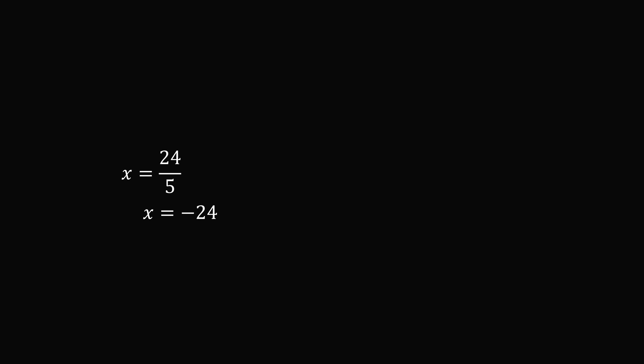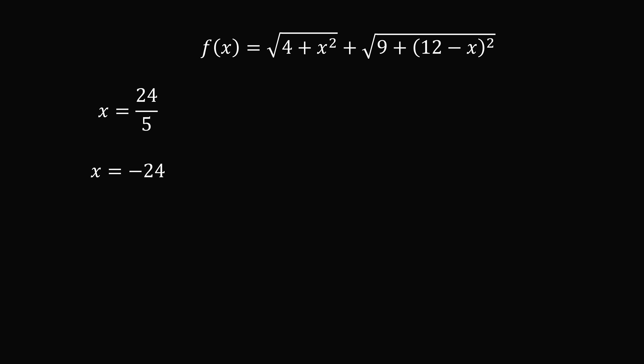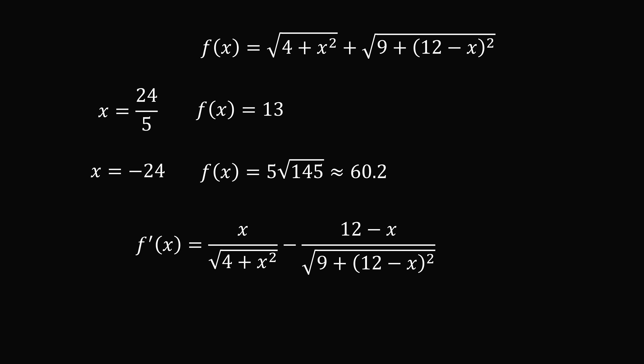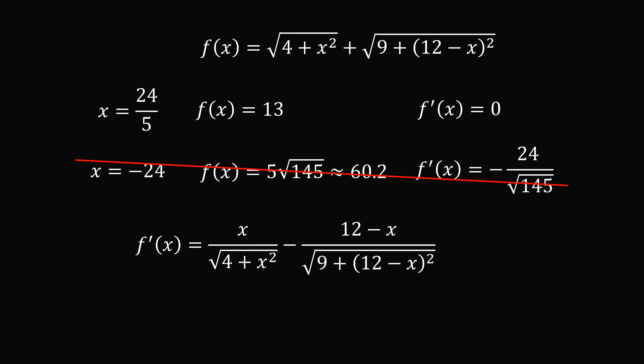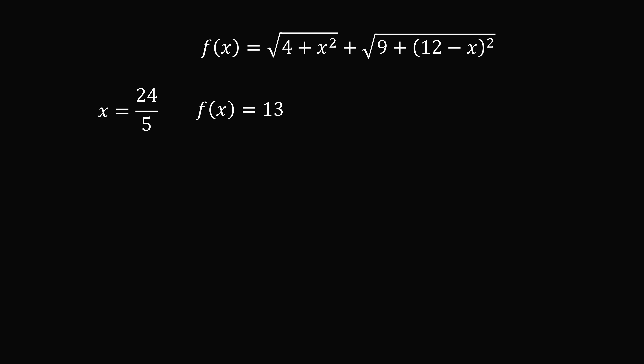We test these solutions. At x equals 24 over 5, the function value is 13. At x equals negative 24, the function value is approximately 60.2. Checking the derivative, f prime equals zero at x equals 24 over 5, but f prime is not equal to zero at x equals negative 24 — that was an extraneous solution introduced when we squared both sides. So the minimum value is f of x equals 13, when x equals 24 over 5.